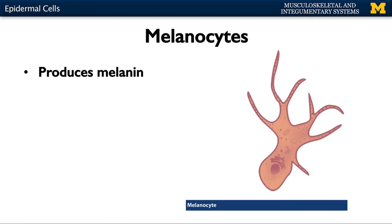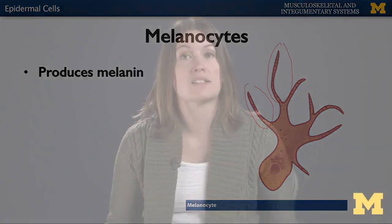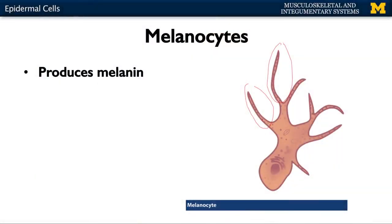Melanocytes are the cells that actually produce melanin pigment. We'll discuss this in more detail, but they are very important for protection from UVB radiation. Note the almost spider-like extensions of the melanocytes — these processes extend in between keratinocyte cells, allowing small melanin pigments to move into the keratinocytes to protect their nuclei.